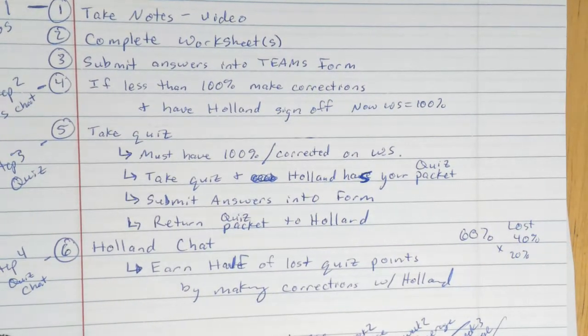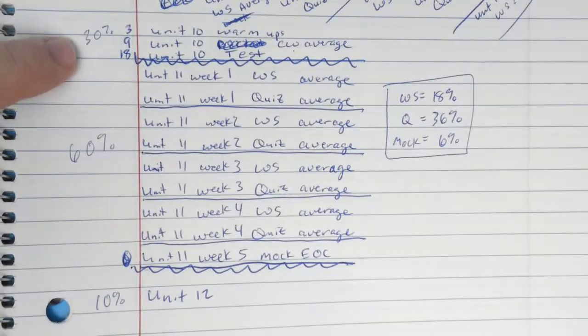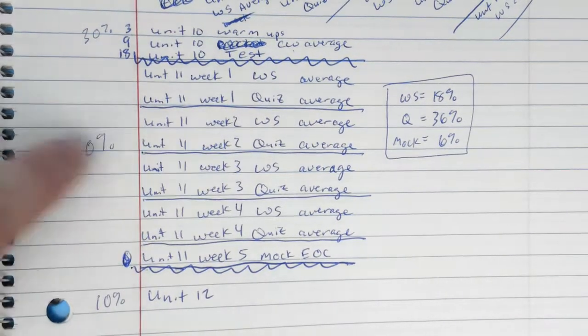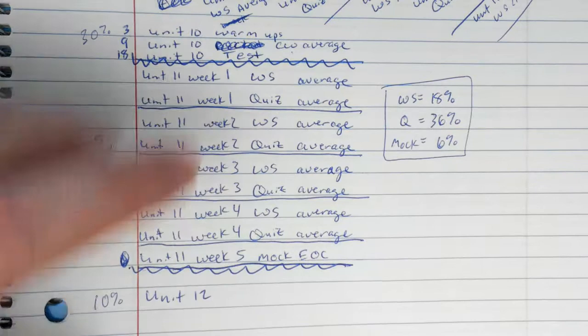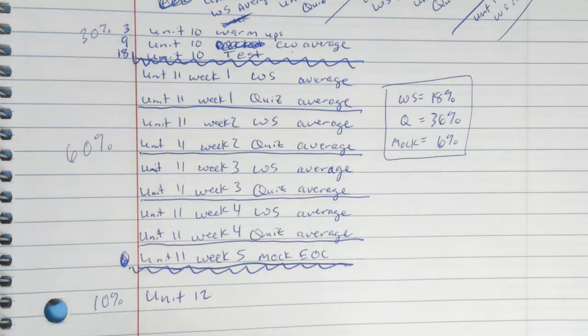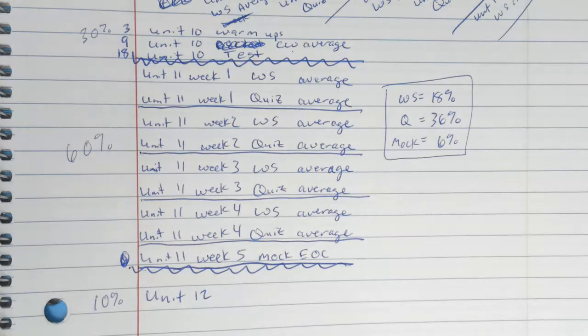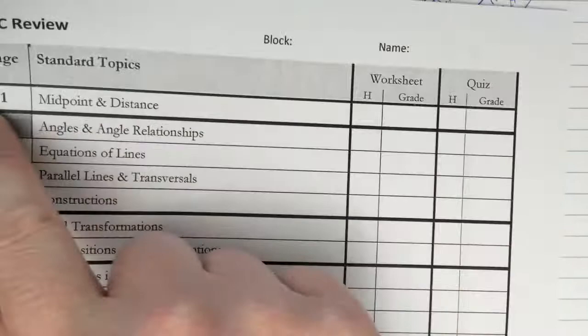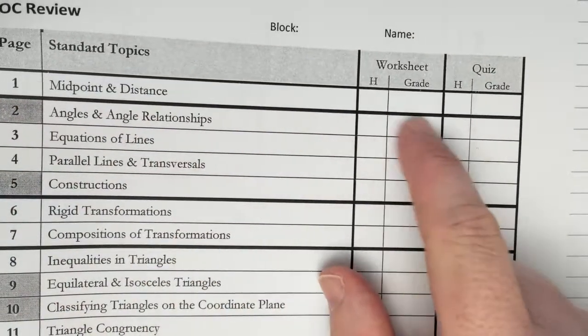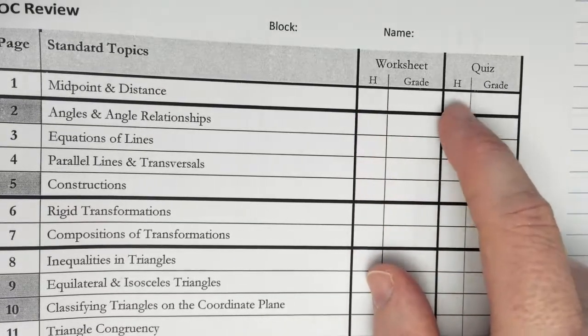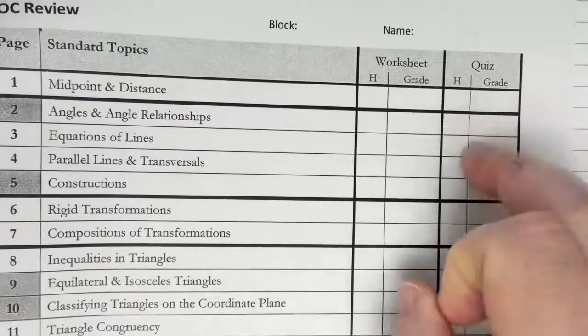So we know that 30% of your grade is unit 10, which we just finished. Unit 11, that is 60%. And then unit 12, after we take the end of course exam, we only have about a week or two left. That's going to be 10% of your grade. So then we have our worksheet. You finished your worksheet. I sign off on it. You take your quiz. And then once we have our chat, I sign off on that too. And you have your piece of grade. And so these are all the worksheets you're going to be doing.